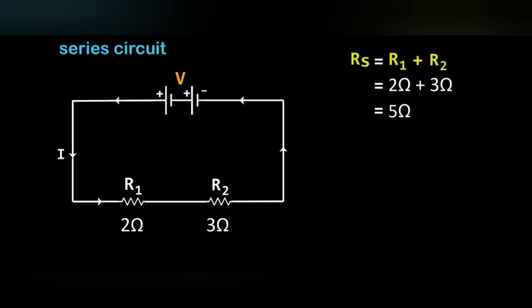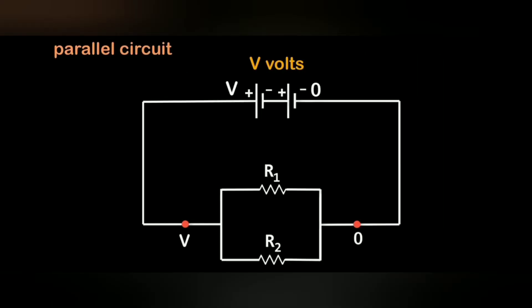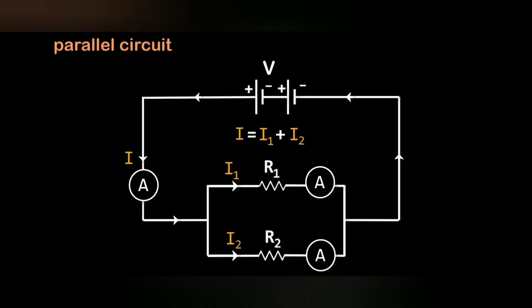The total resistance is always greater than the individual resistances. In a parallel circuit, R1 and R2 are connected in parallel. Here the current is going to split into I1 and I2 through R1 and R2 resistances respectively.